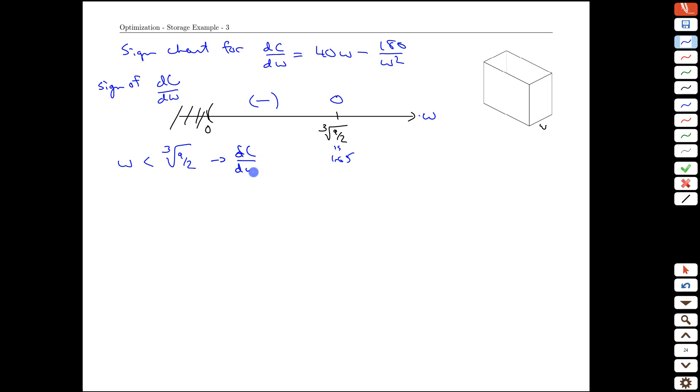And if you do the same thing for w's that are bigger than that threshold, cube root of 9 halves, you're going to get a derivative that is positive. As w gets bigger, this term, the positive term gets larger and this gets smaller. So you'll have that.